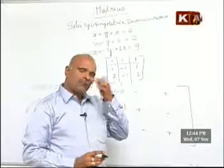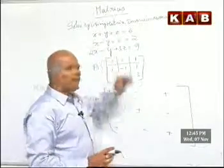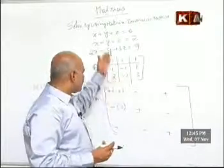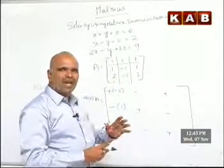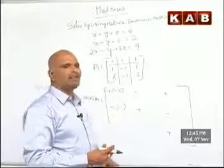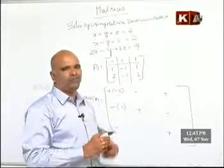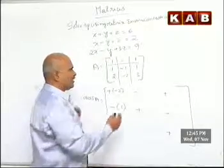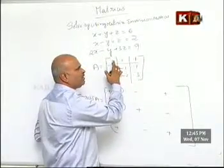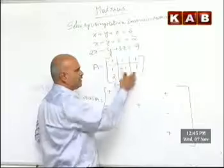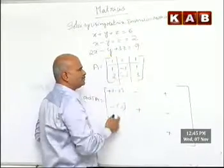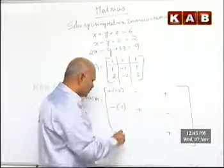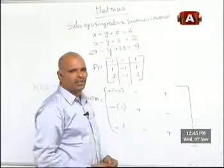Here you have to observe: while finding the row minor, I am writing it in the column. So directly we can get the transpose of cofactors — this is one approach. Again, I would like to find the first row, third column element. This is minus 1 plus 2. Minus 1 plus 2 is 1, so I write 1 there.